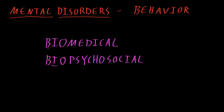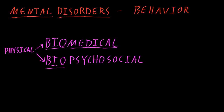The 'bio' part of both of these terms is short for biological, or physical abnormalities. This can be things like abnormalities in the molecules of the cells of the brain that affect how they function, or abnormal patterns of connections between the neurons in the brain. The biomedical approach really focuses on these physical, biological abnormalities.